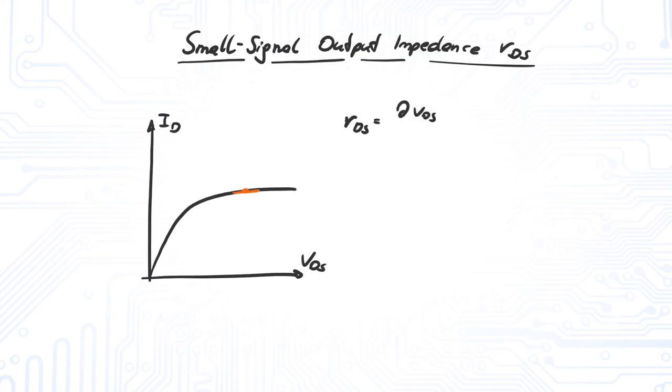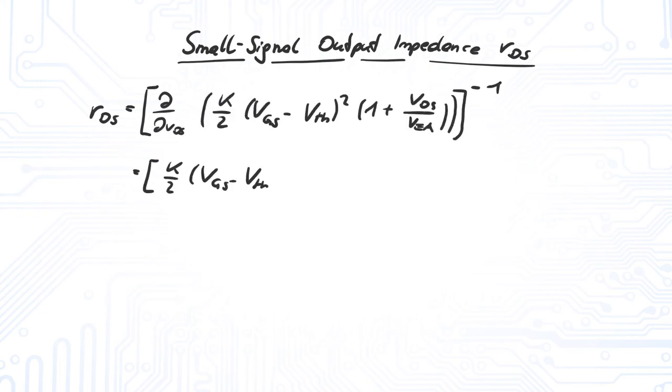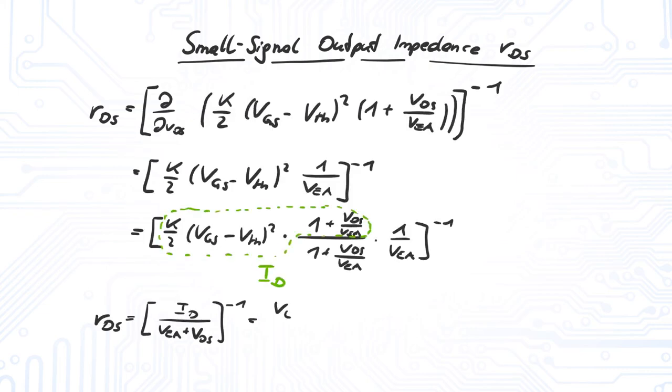The small signal output impedance, RDS, is the inverse derivative of the output characteristic. The calculation itself is not very complicated and rather straightforward.